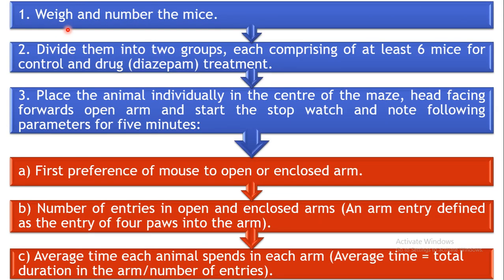Coming to the procedure of the experiment: first, weigh and number the mice and divide them into two groups, each comprising at least six animals. One group is used as a control and the second as a treatment group treated with diazepam. Place all the animals individually at the centre of the maze with the head facing towards the opposite arm, start the stopwatch, and note the following parameters for approximately five minutes. For the control group, place the animals directly and check the parameters for five minutes.